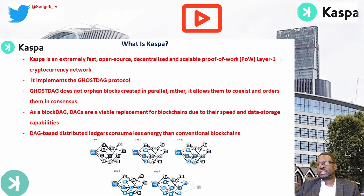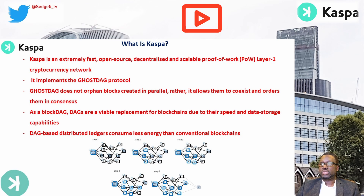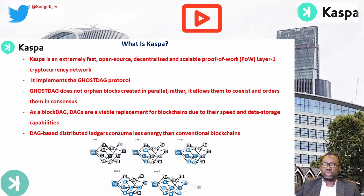Casper is an extremely fast, open-source, decentralized, and scalable proof-of-work layer one cryptocurrency — not a blockchain strictly speaking — because it implements the GhostDAG protocol. In contrast to traditional blockchains, GhostDAG does not orphan blocks created in parallel; rather, it allows them to co-exist and orders them in consensus as a blockDAG (Directed Acyclic Graph). DAGs are a viable replacement for blockchains due to their speed and data storage capabilities, similar to projects like IOTA, which also use DAGs. These distributed ledgers consume less energy than conventional blockchains.